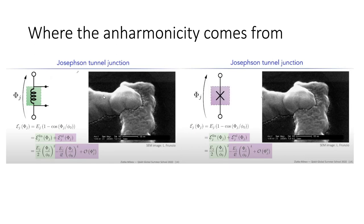Going back to the physical picture of the qubit — you have the metal plates cooled to the superconducting state and the Josephson junction. There is a green part which corresponds to a linear term. The epsilon_J is the Josephson energy; here is a cosine involving the magnetic flux and the magnetic flux quantum — similar to what we saw with the Josephson AC and DC current, but here it's for the energy.